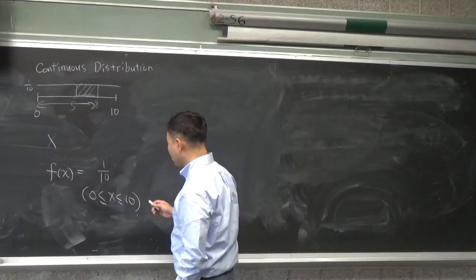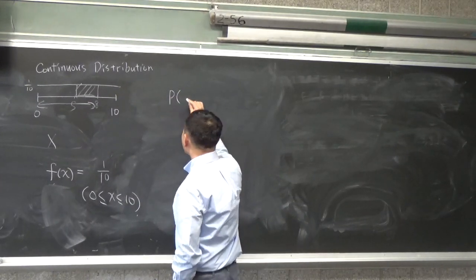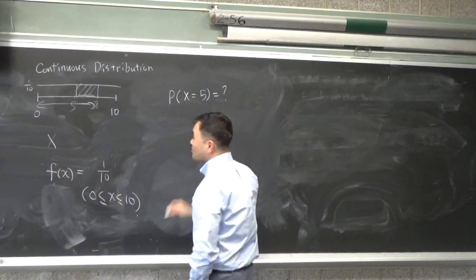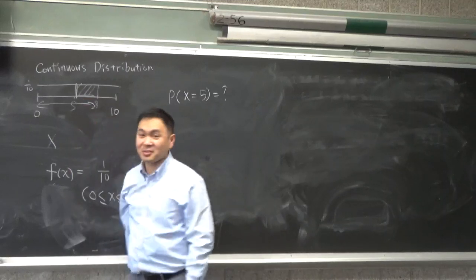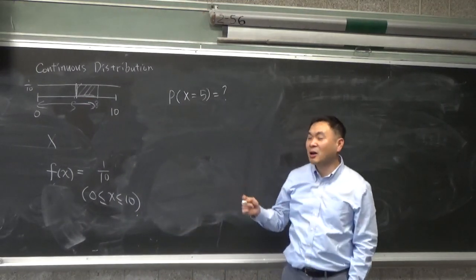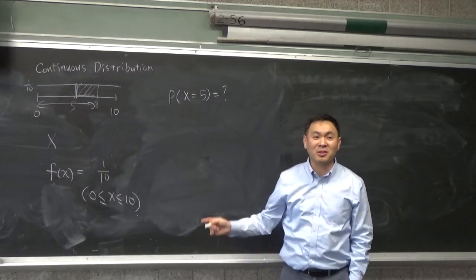Here's a question: What's the probability that x is equal to 5? One tenth? Exactly 5, right here. The probability that the coin will be found exactly at the spot 5. One tenth? No, no, not one tenth.